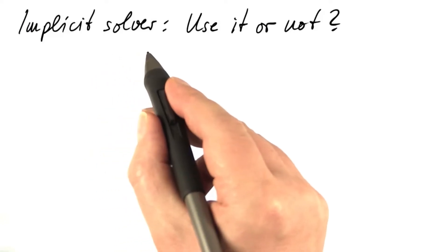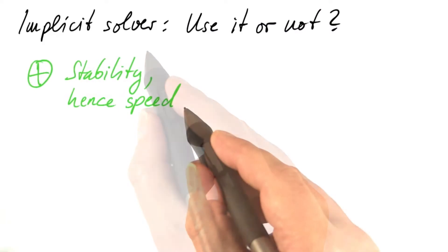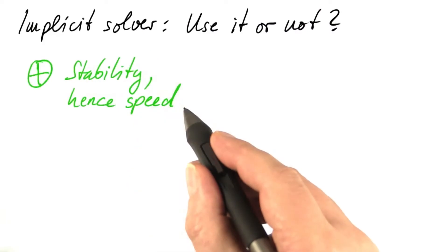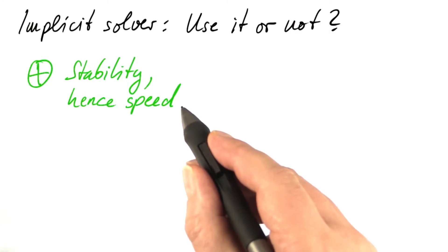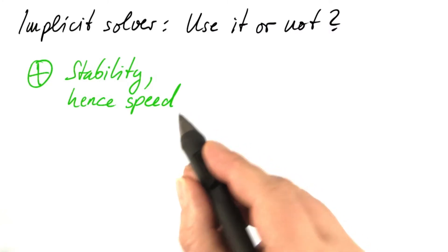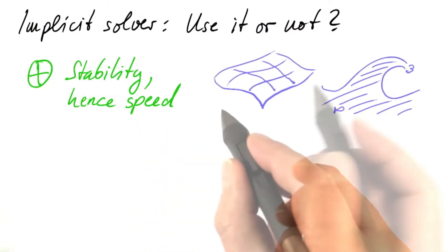Let's summarize some facts about implicit solvers, the simplest of which is the Backward-Euler method. The big benefit is the stability. We can use large step sizes, and stiff differential equations don't force us to use overly tiny step sizes, which results in speed.